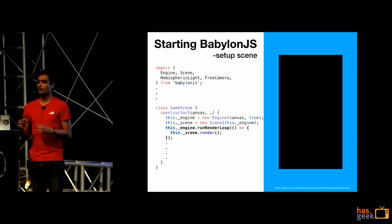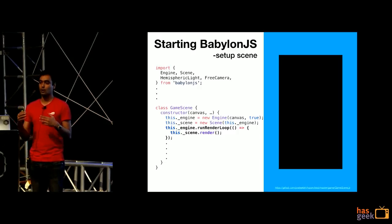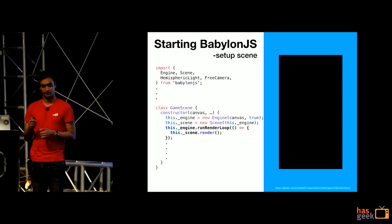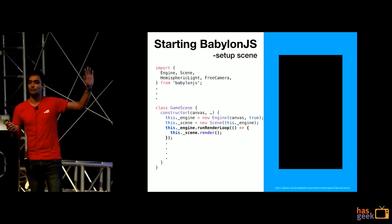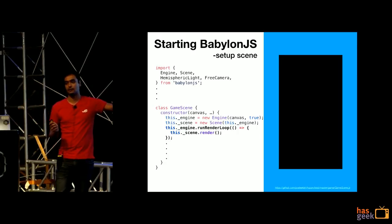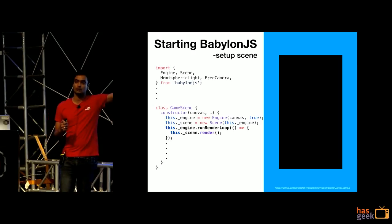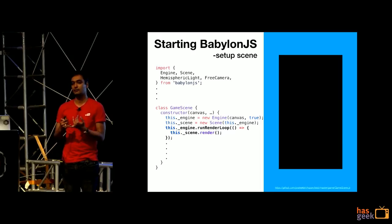The render loop tells Babylon that whenever this function is called, you need to call scene.render to continuously re-render your game scene. This will give you a black screen — there's no background color, Babylon.js has rendered a black screen because there are no lights and just a simple canvas.